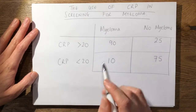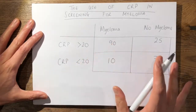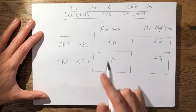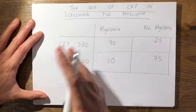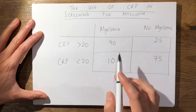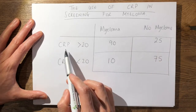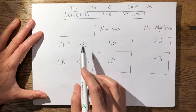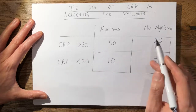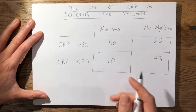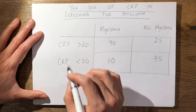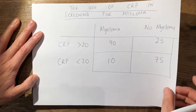In my Basic Sciences Viva I was shown this table. I couldn't remember the exact numbers but it was something like this. The examiner said these are the results of using CRP as a screening test for myeloma, and gave me approximately 10 to 20 seconds to familiarise myself. He explained that these numbers were the number of patients — when CRP was greater than 20, 90% of patients had myeloma, however 25 patients did not have myeloma. He asked me what I could gather from this table about how useful CRP was in detecting myeloma.